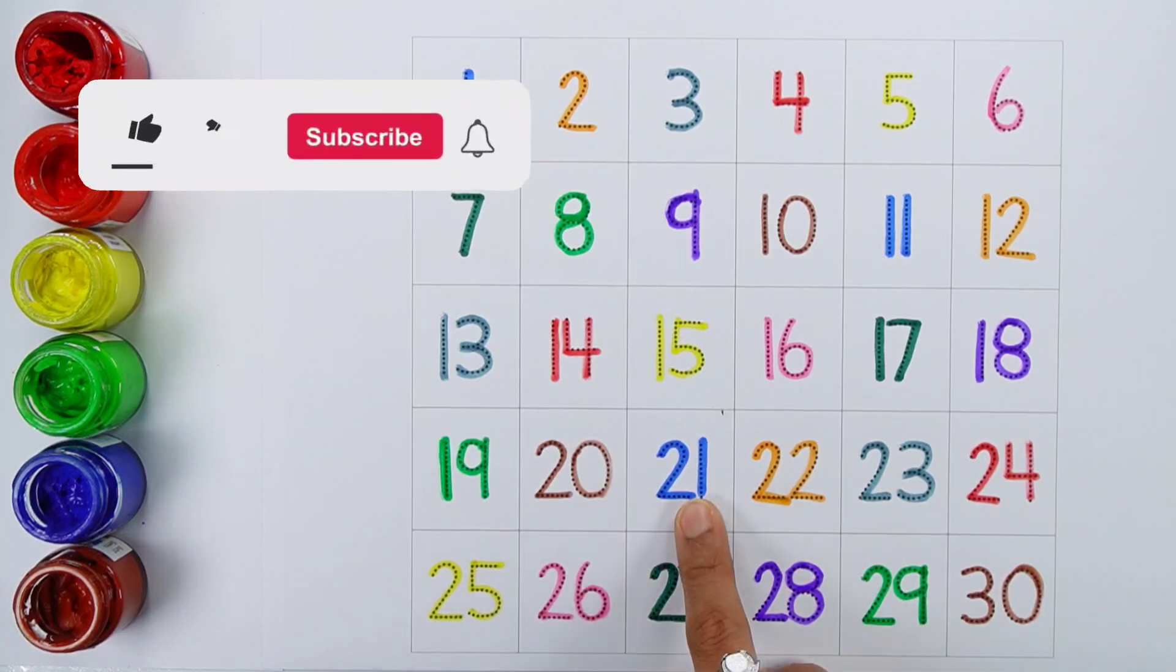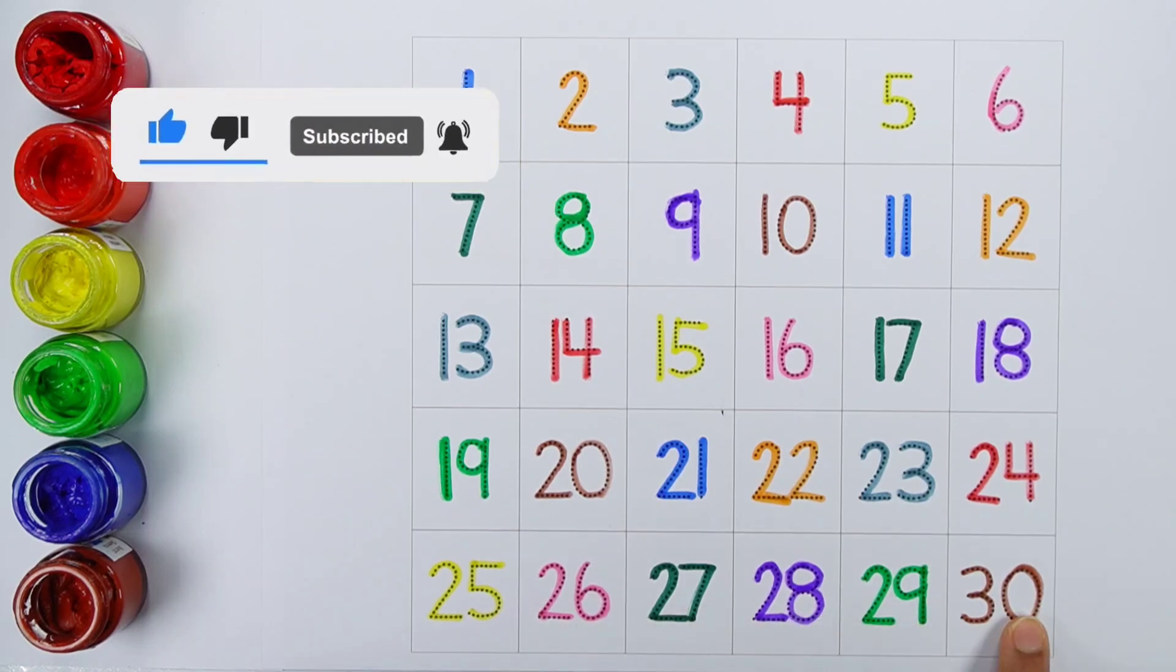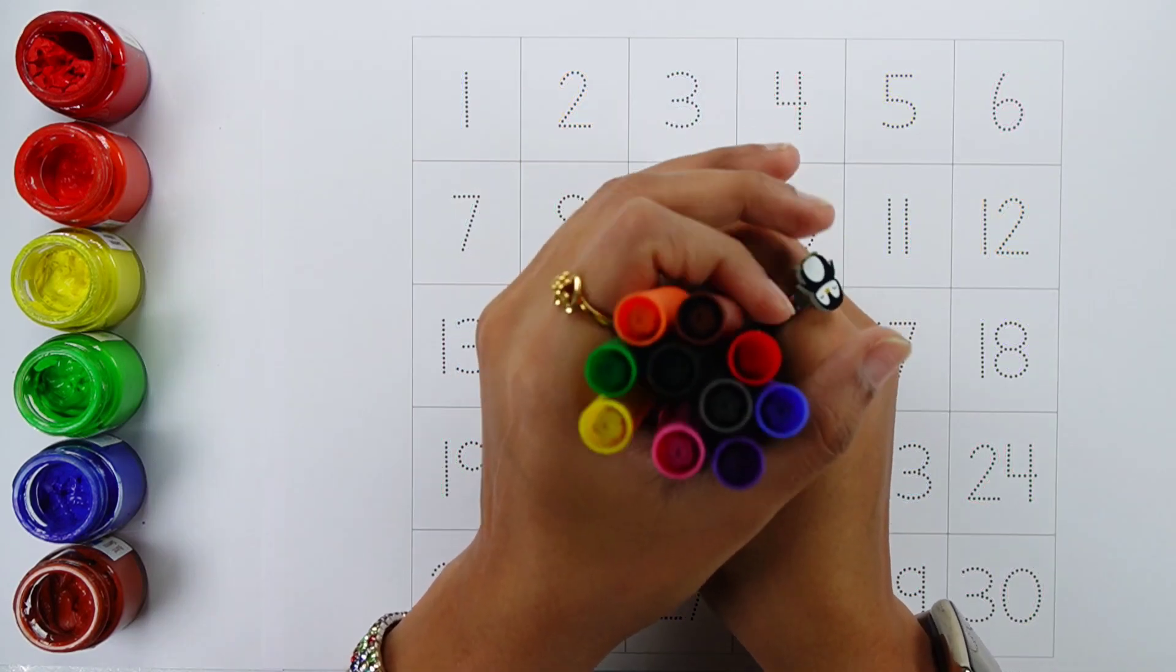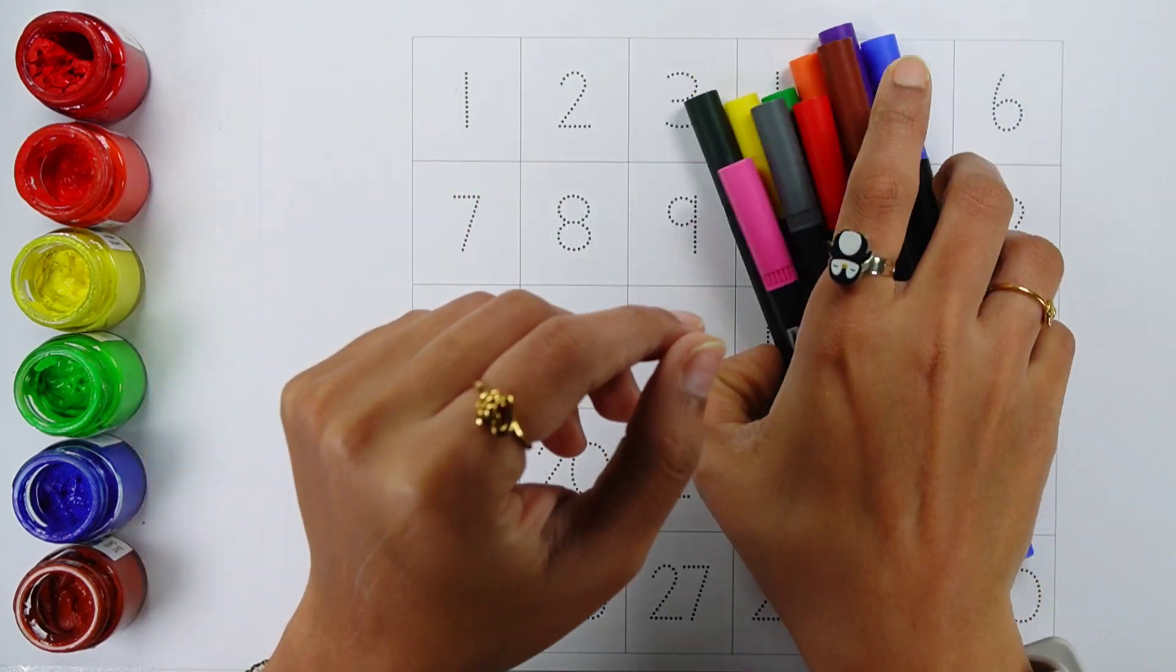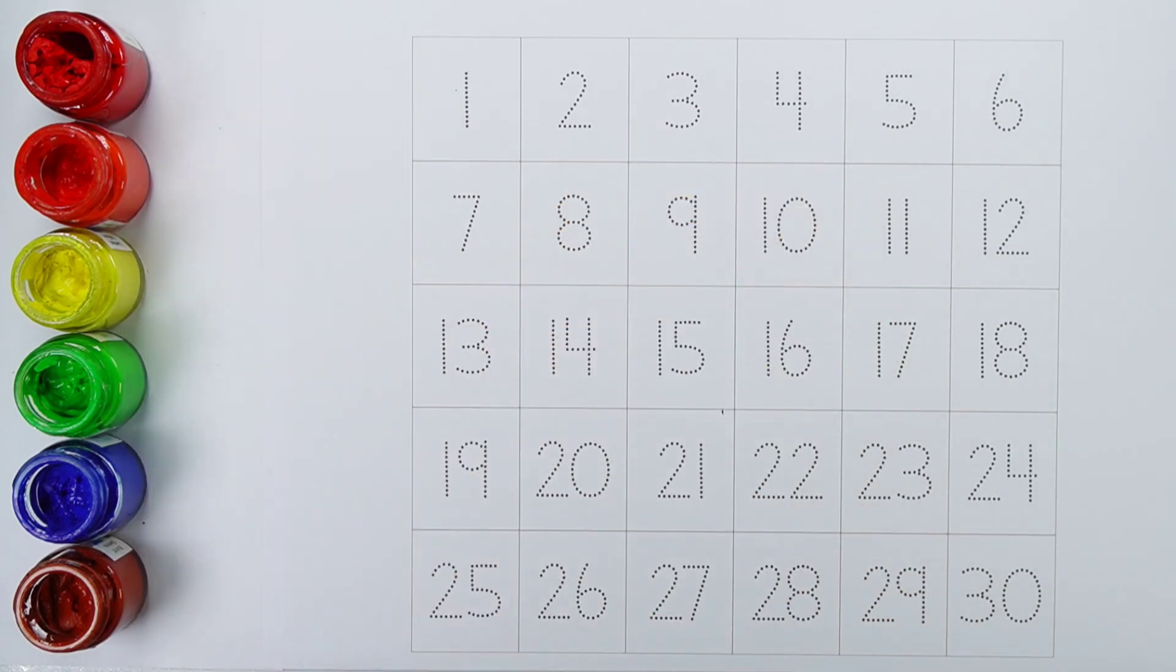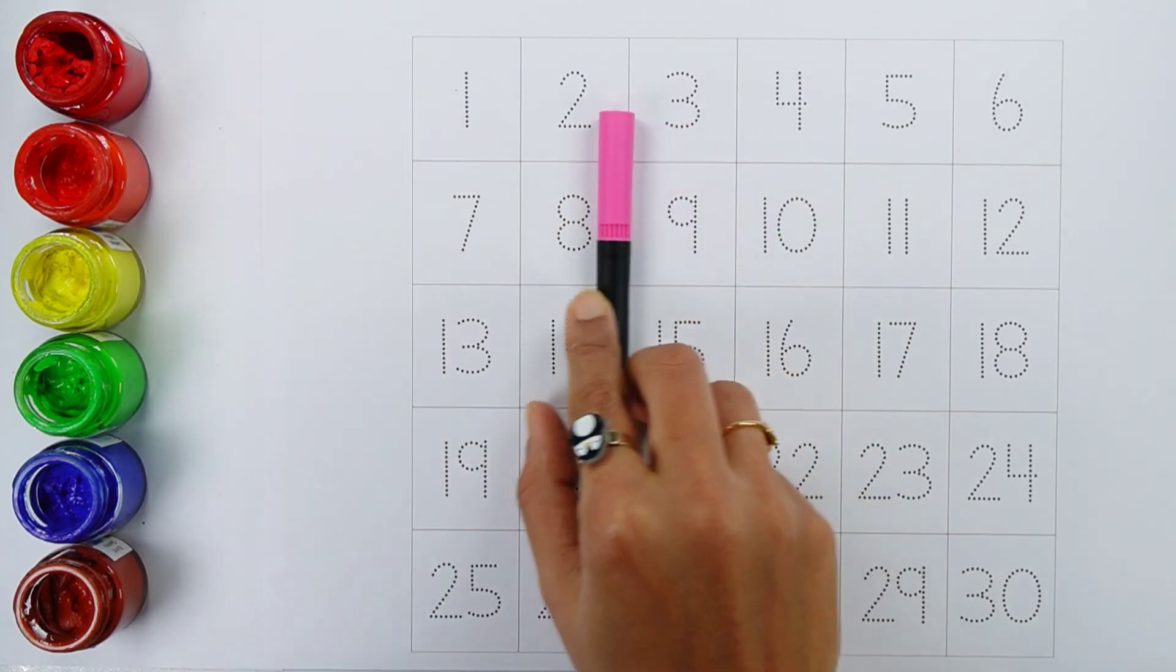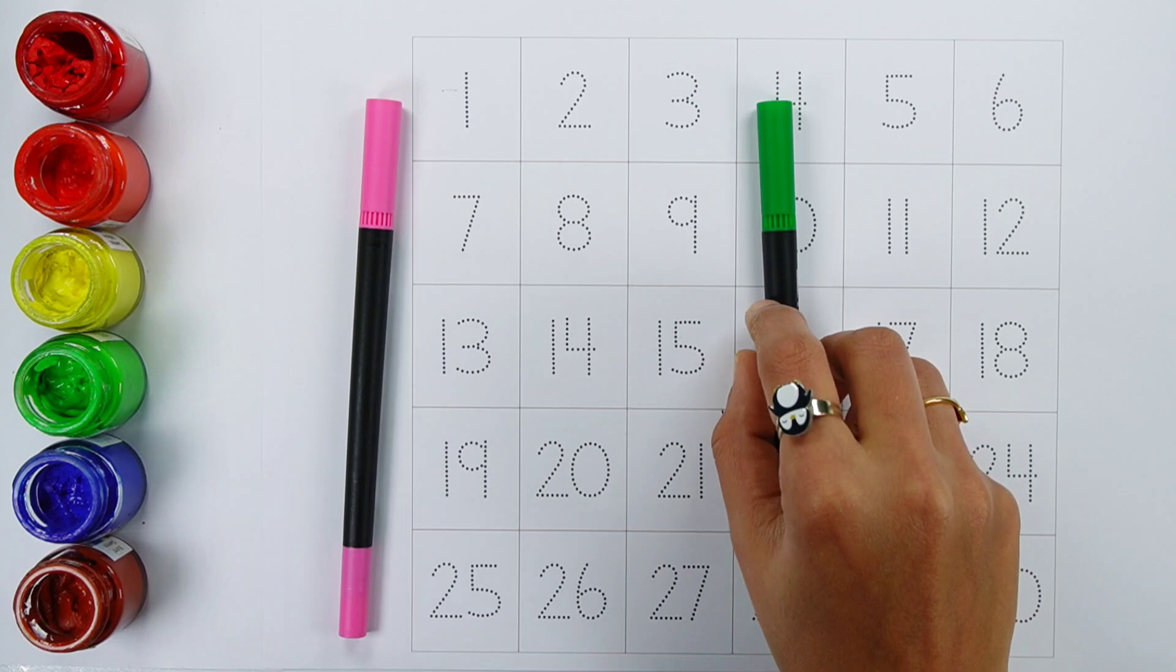19, 20, 21, 22, 23, 24, 25, 26, 27, 28, 29, 30. Let's learn some colors. Pink color, light green color.